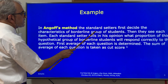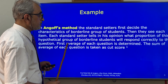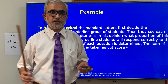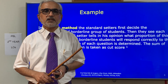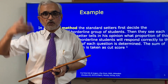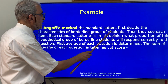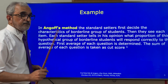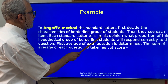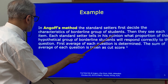In the Angoff method, the standard setters first decide the characteristics of a borderline group of students. The experts sit down and, knowing the students well, they describe what the characteristics of a borderline student are — not the top student, not the lowest one. Then they examine each item and each standard setter gives their opinion on what proportion of this hypothetical borderline group would respond correctly to that question.